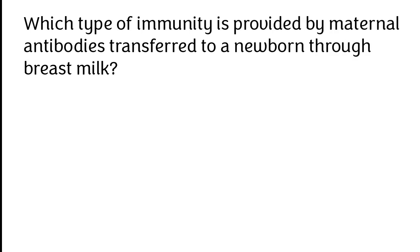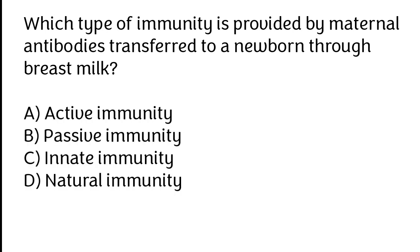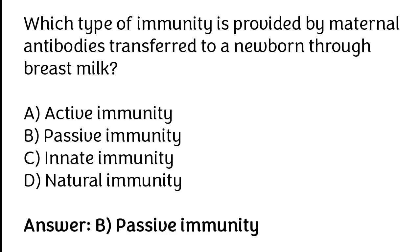Which type of immunity is provided by maternal antibodies transferred to a newborn through breast milk? Active immunity, passive immunity, innate immunity, natural immunity. The correct answer is option B. Passive immunity is the type of immunity provided by maternal antibodies transferred to a newborn through breast milk.